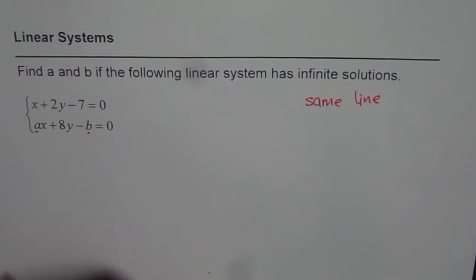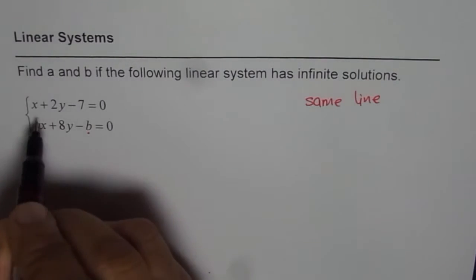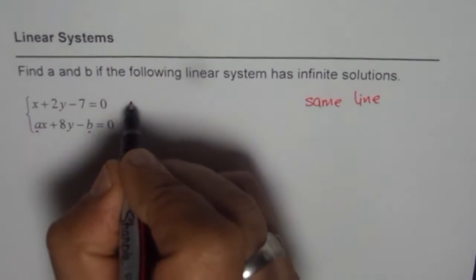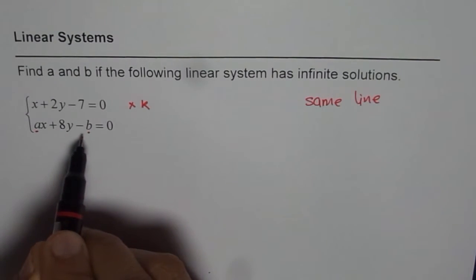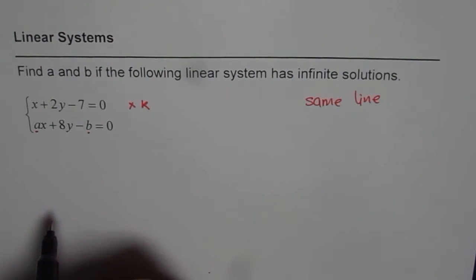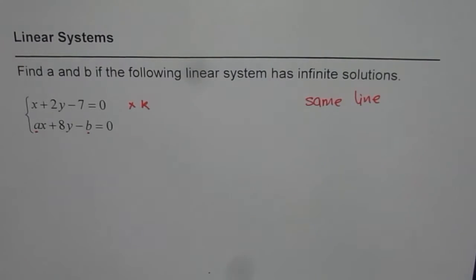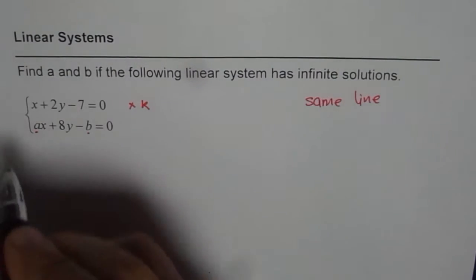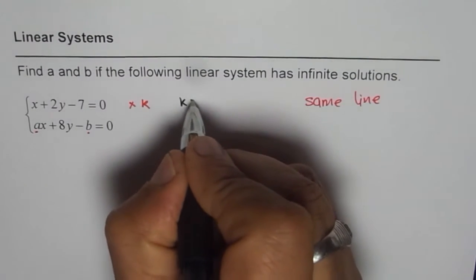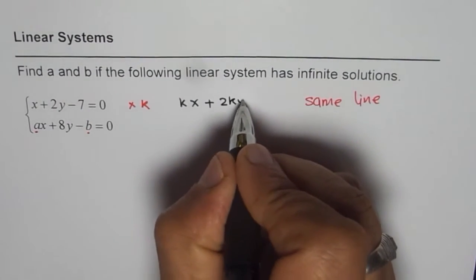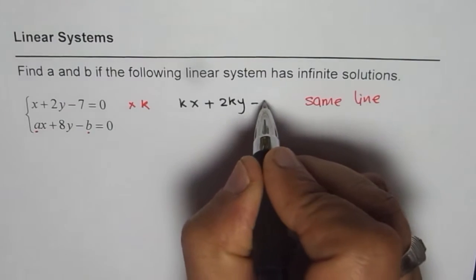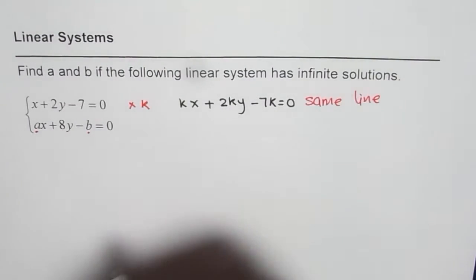That basically means if I multiply the first line by a constant k, I should get the same equation as the second equation. So let me multiply it by k. What do I get? I get kx + 2ky - 7k = 0, right?